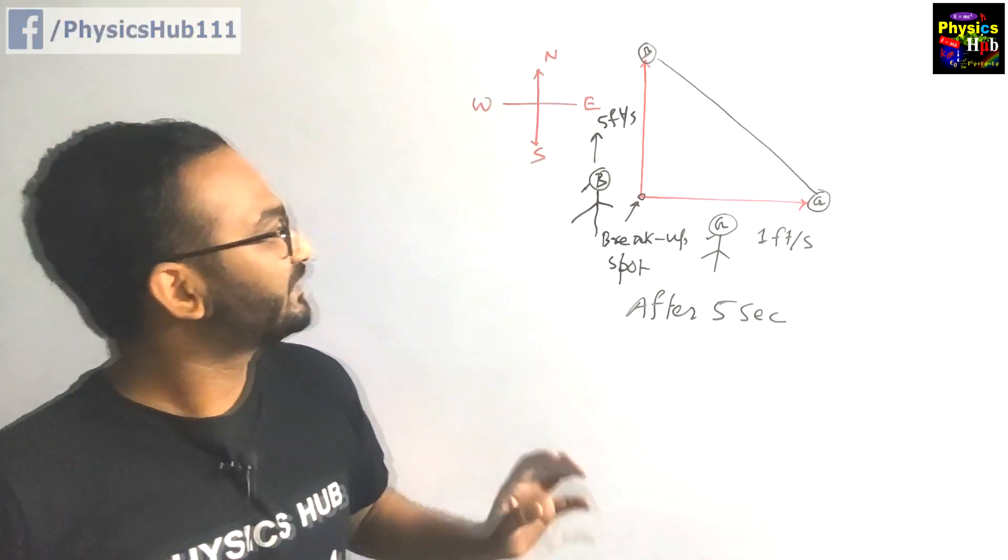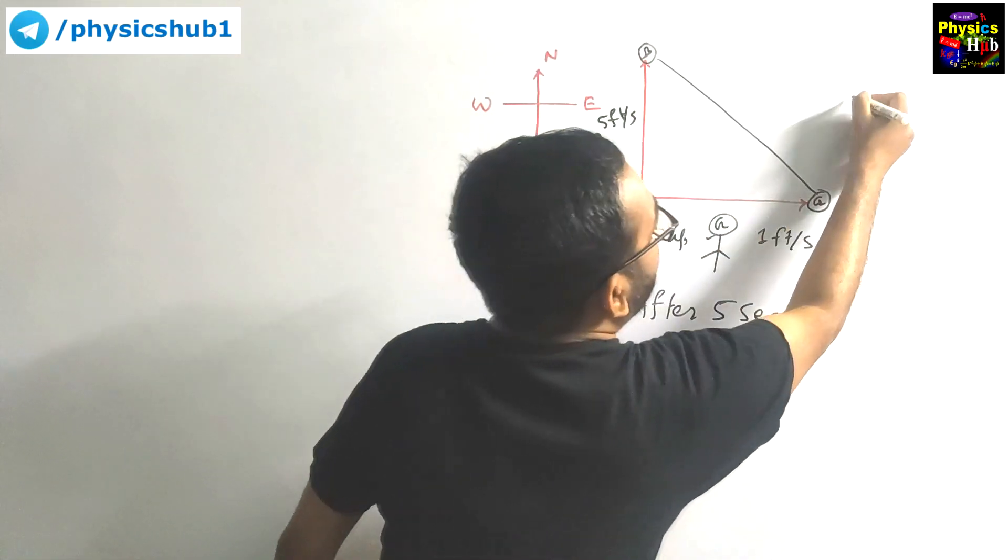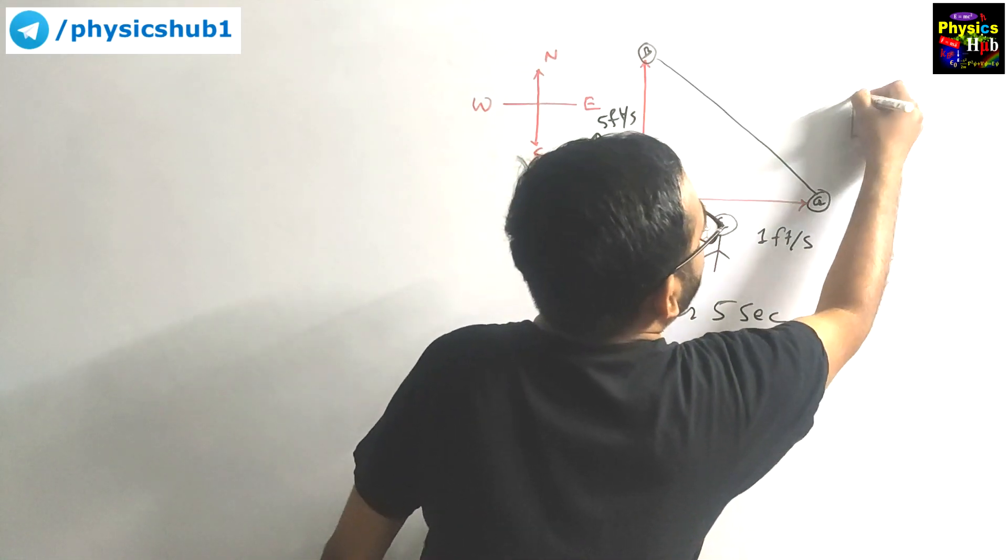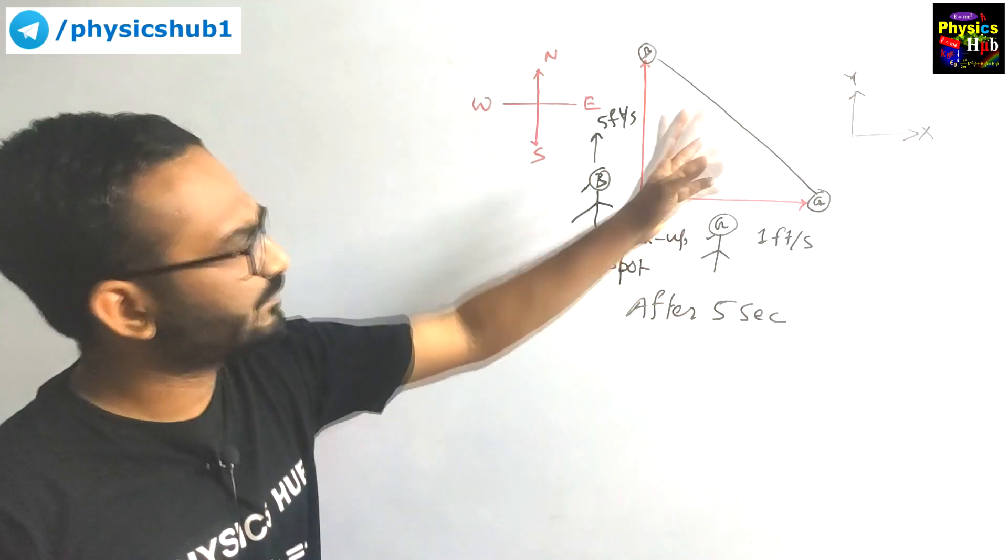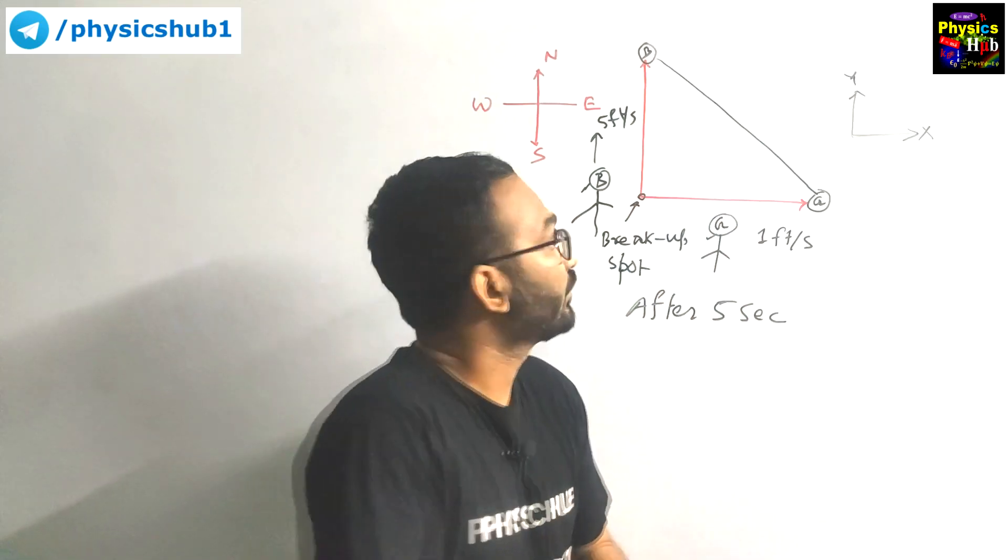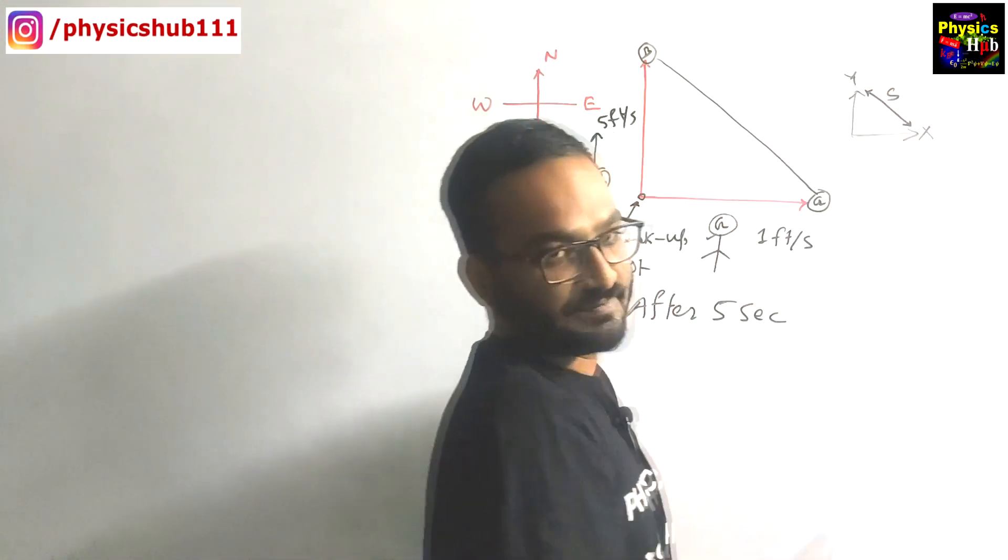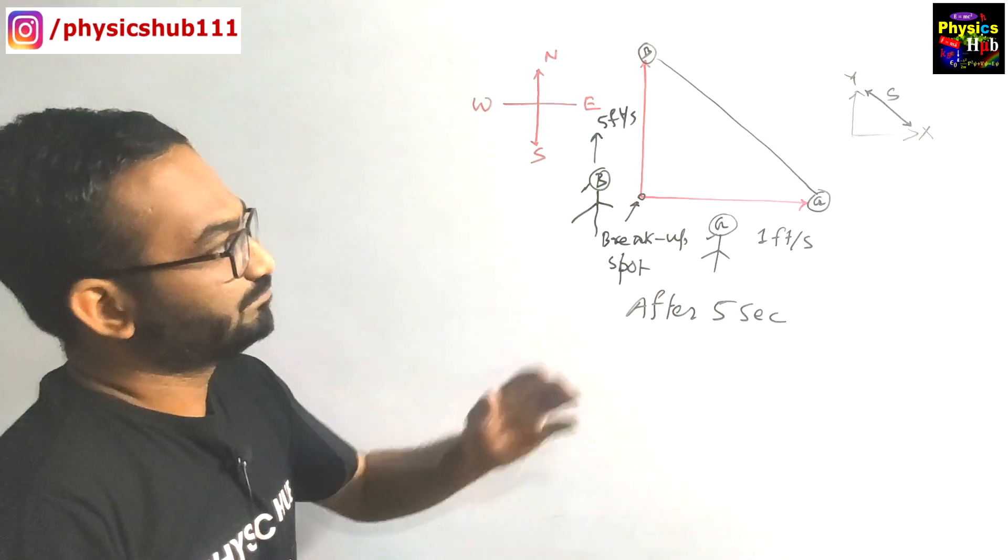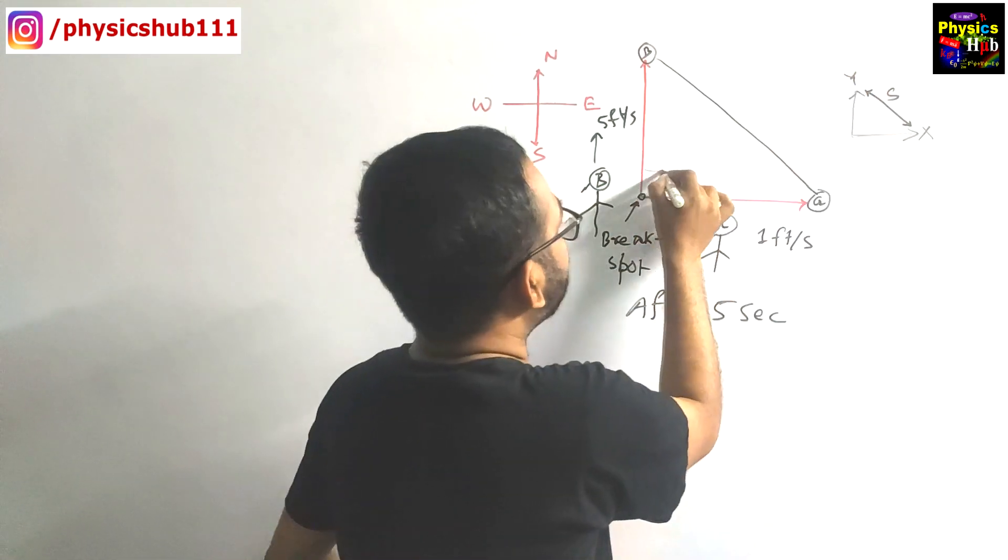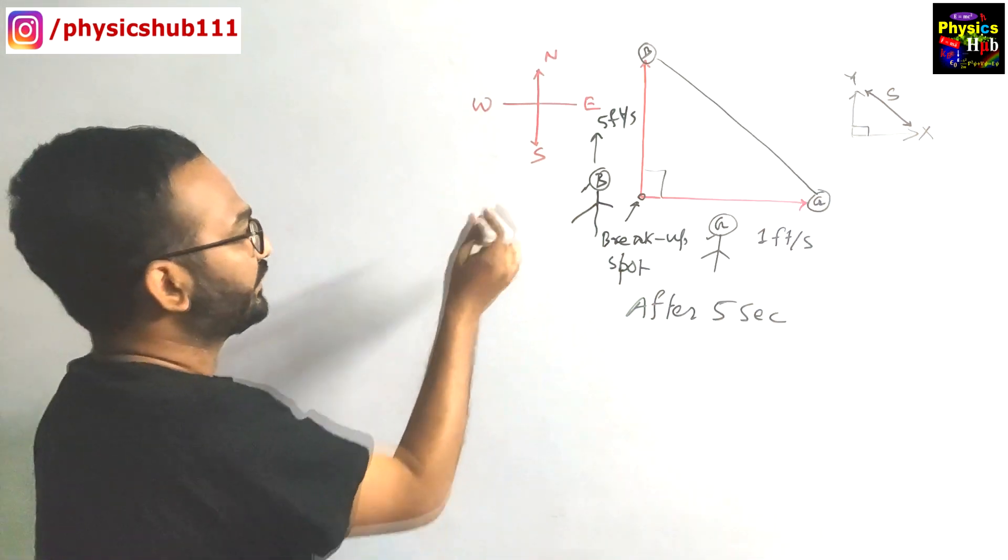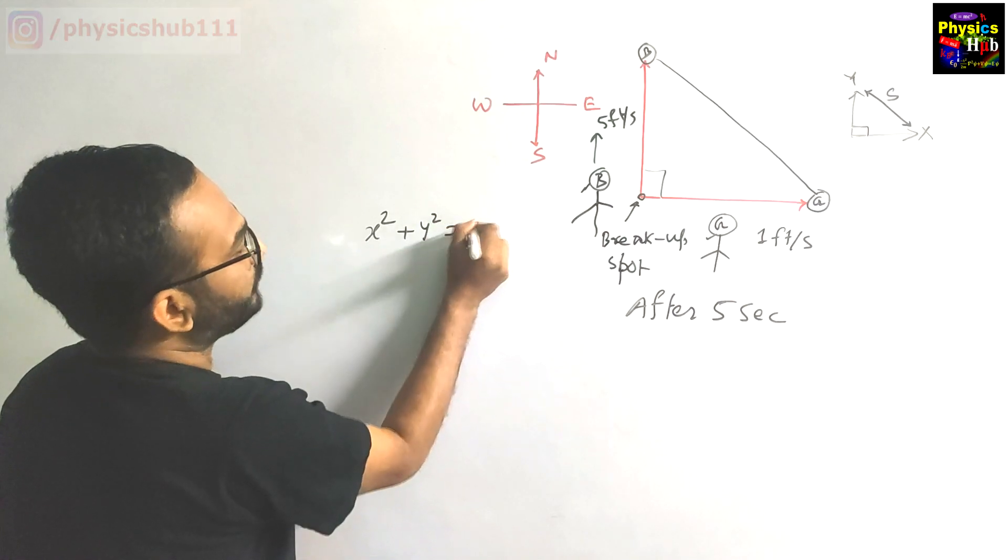So we are setting up coordinates. Let's say we are giving this in a coordinate form. This is the x-axis, this is the y-axis, and the separation between them may be taken as variable s. From the Pythagorean theorem, this angle is 90 degrees, so we can write x² + y² = s².